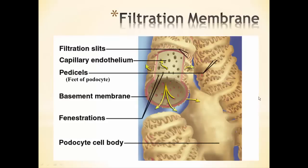Looking at the filtration membrane more closely, we see the endothelium of the capillaries here — these are fenestrated capillaries with big holes or fenestrations in them. Then in pink is what's called the basement membrane. Outside of that are cells called podocytes. These podocytes have long finger-like projections that extend out and wrap around the capillary, with little extensions that make what are called filtration slits — the spacing between these little fingers extending off the podocyte helps regulate what fluids can be filtered through this filtration membrane.